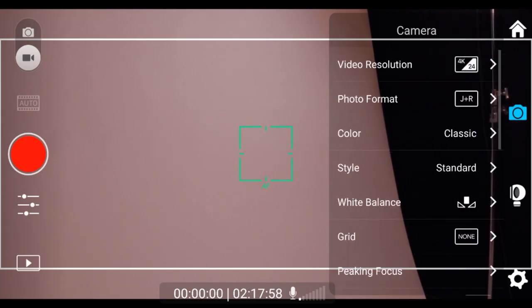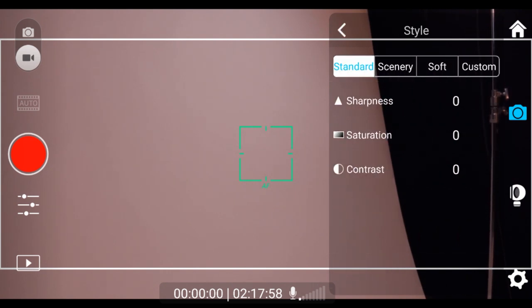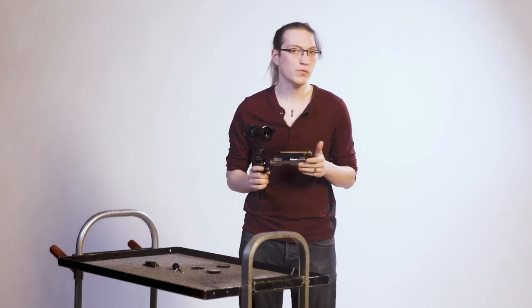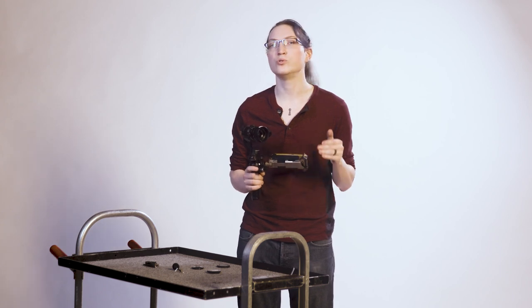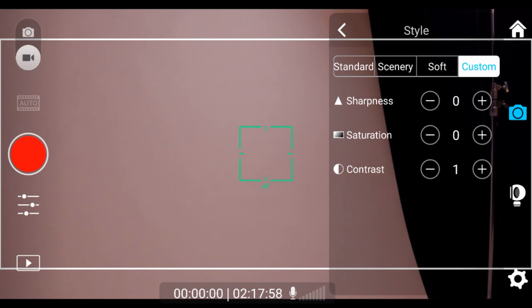In addition to the color, you will also be able to adjust what is called style. Style offers you additional control over the sharpness, saturation, and contrast of the image. This is done in addition to the color profile you select, so you can truly customize the look of your footage. Your options will be standard, scenery, and soft, which are presets, as well as a custom where you can select the values for each setting up to plus or minus 3.